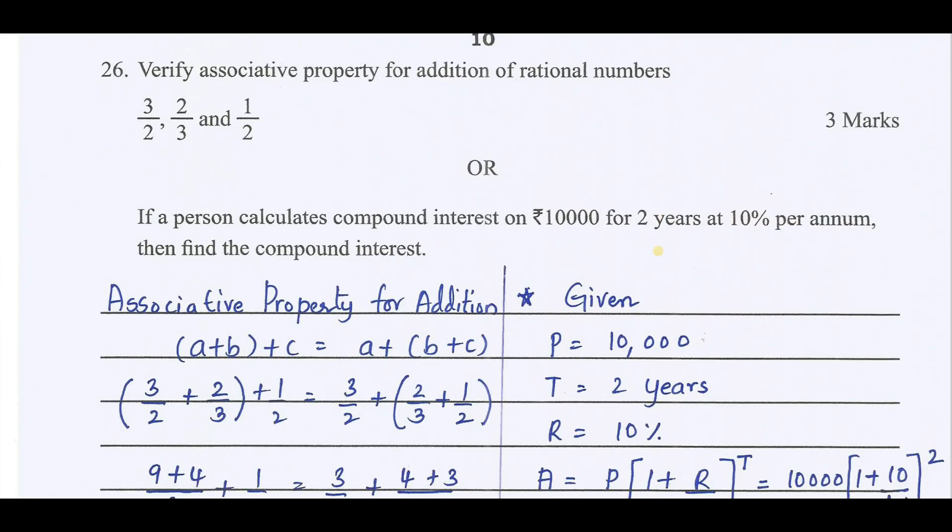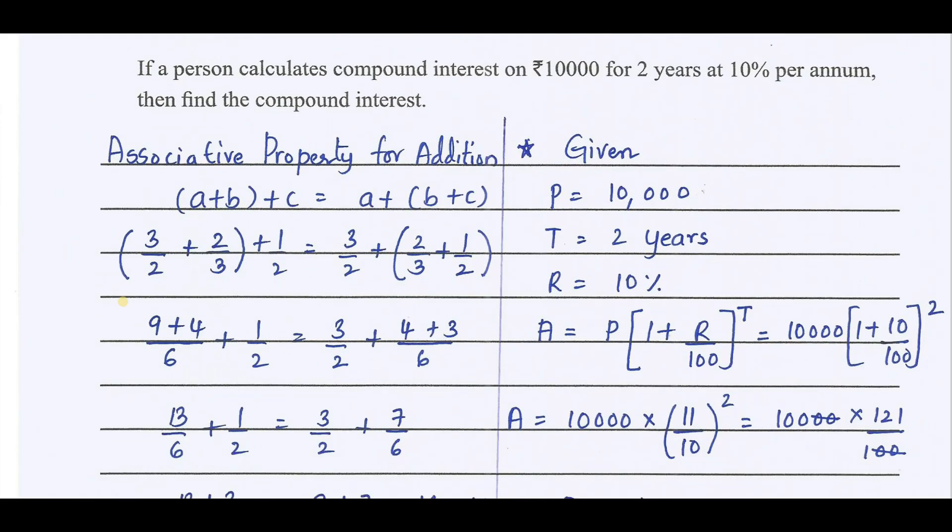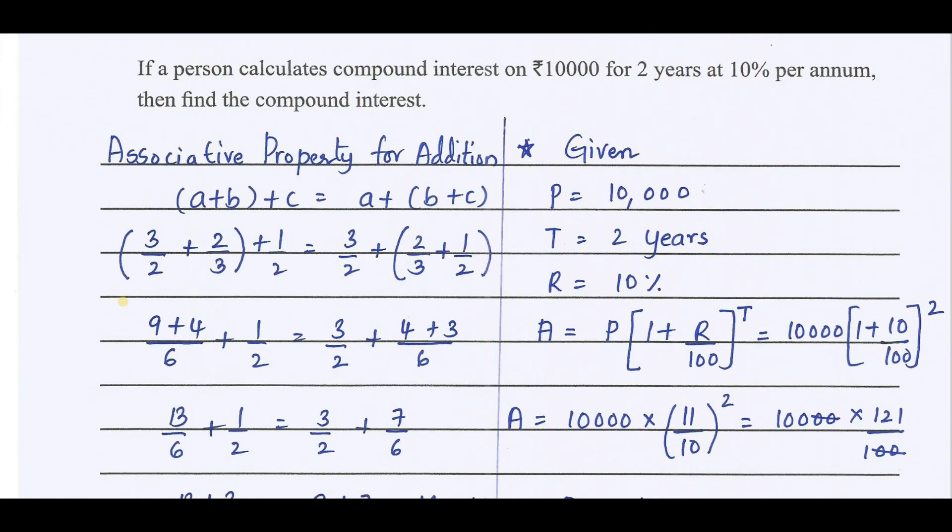Verify associative property for addition. Associative property for addition is A plus (B plus C) equals (A plus B) plus C. Now, substituting and simplifying, we get 8/3 which is equal to 8/3. Hence, verified.